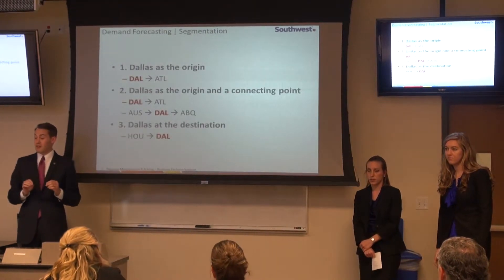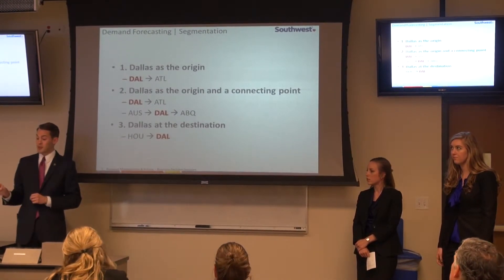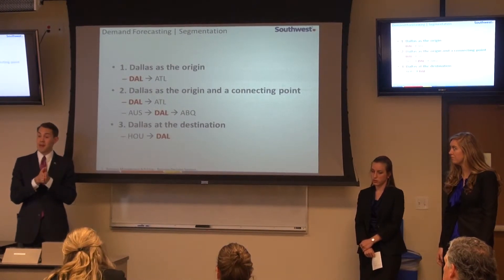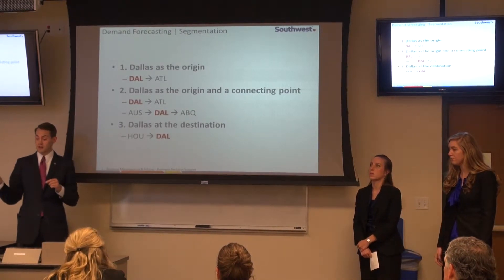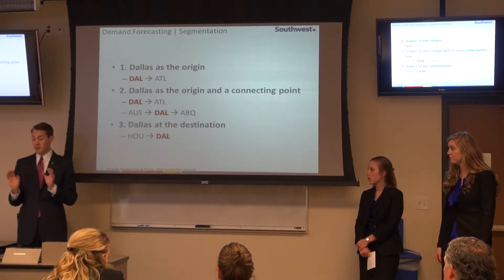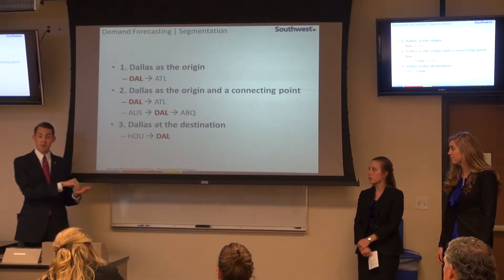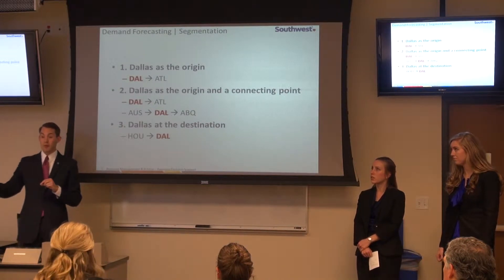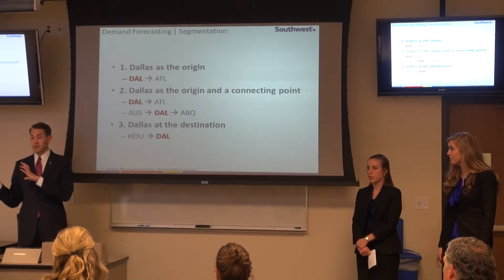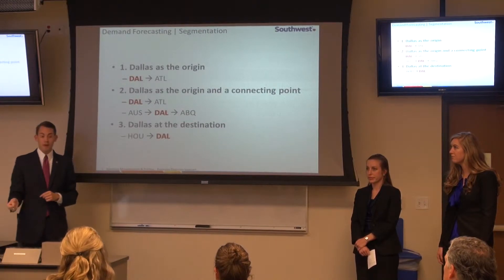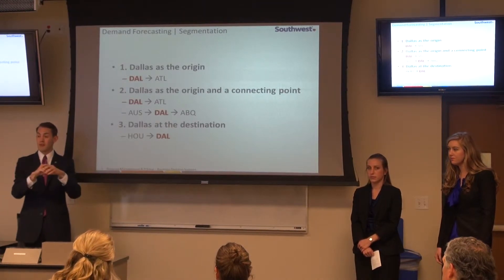Diving further into demand, we found we would require some segmentation. The first segment looks at Dallas as the origin — Dallas originating passengers traveling to destinations currently served with a direct flight, as well as destinations like Atlanta that require a connection. The second iteration includes the first, but also takes into account demand for Dallas as a connecting point — for example, a passenger starting in Austin, connecting through Dallas Love Field, then going to Albuquerque. Finally, we wanted to see demand for Dallas as a destination, with all Southwest-served destinations flowing into Dallas Love Field.